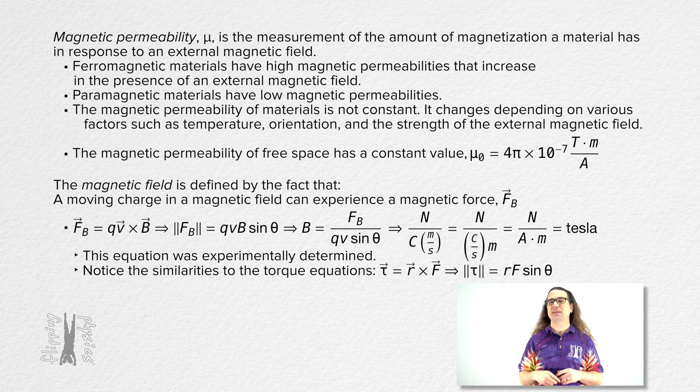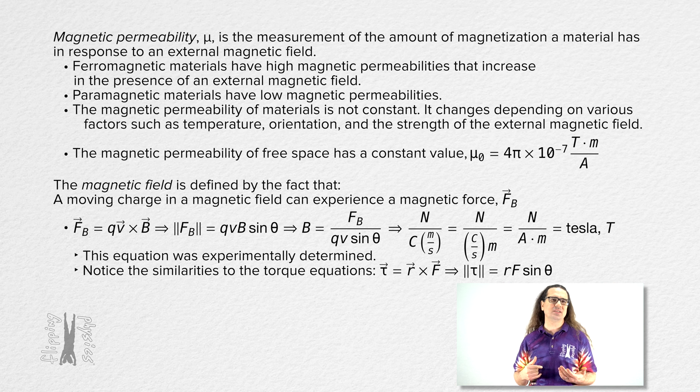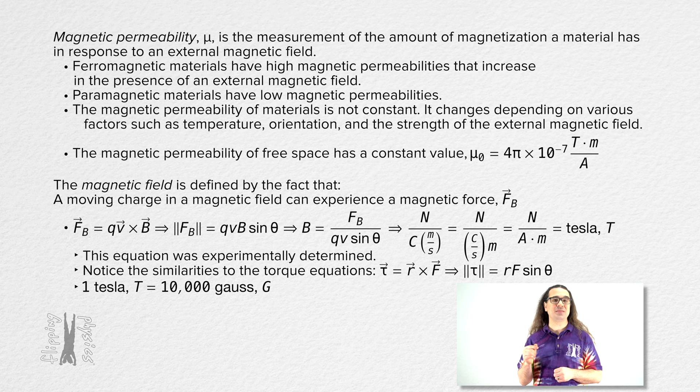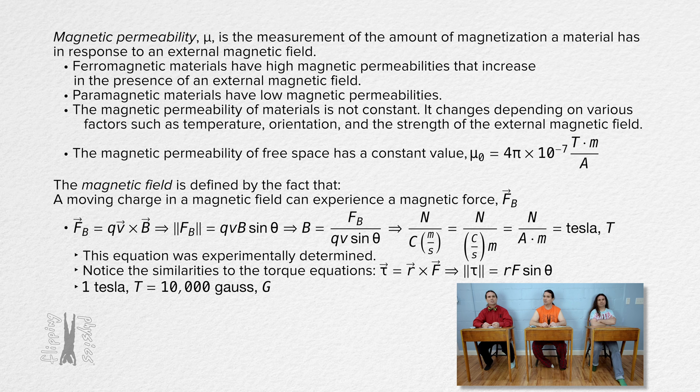The units for the magnetic fields typically are Tesla's, capital T. However, sometimes you will see the magnetic field in terms of Gauss. One Tesla is the same as 10,000 Gauss, capital G, because you know, we need more units.